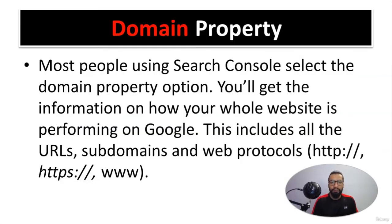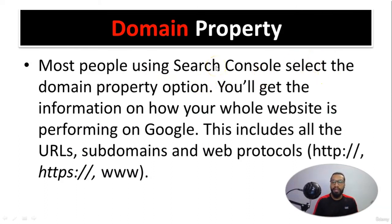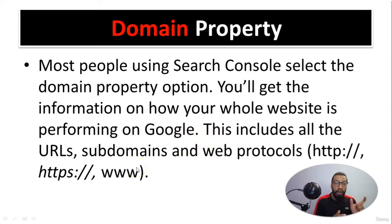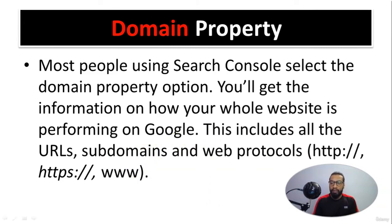Domain property: most people using Search Console select the domain property. You will get information on how your whole website is performing on Google. Domain property level means it will include all the URLs of your domain — subdomains, and all web protocols like HTTP, HTTPS, and www.